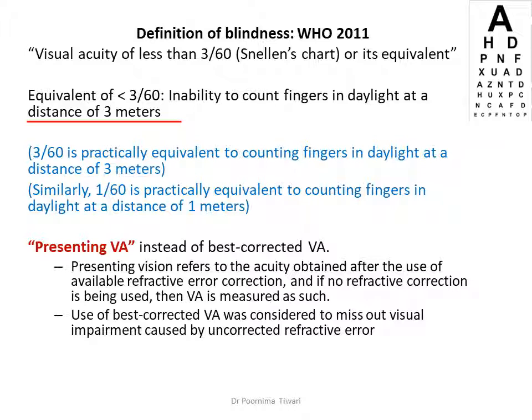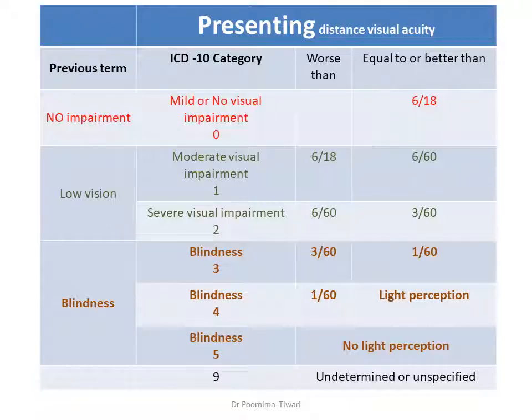This change was made because use of best corrective visual acuity was considered to miss out on visual impairment caused by uncorrected refractive error. These were the categories that WHO had given at that time in 2011.